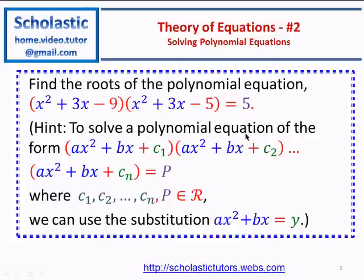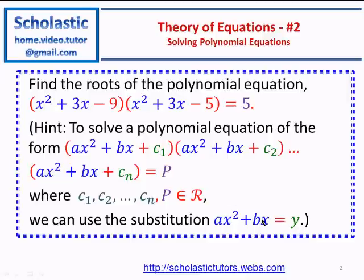The hint is: to solve a polynomial equation of the form (ax² + bx + c₁)(ax² + bx + c₂)···(ax² + bx + cₙ) = p, where c₁, c₂, ..., cₙ and p are real numbers, we can use the substitution ax² + bx = y. That means we substitute x² + bx with y and solve from there.